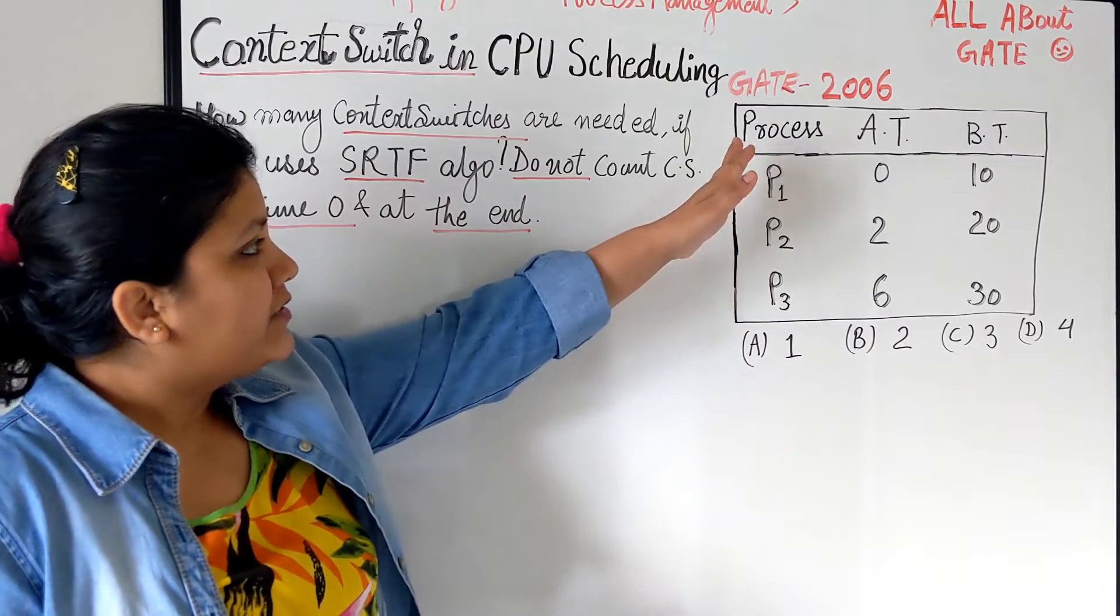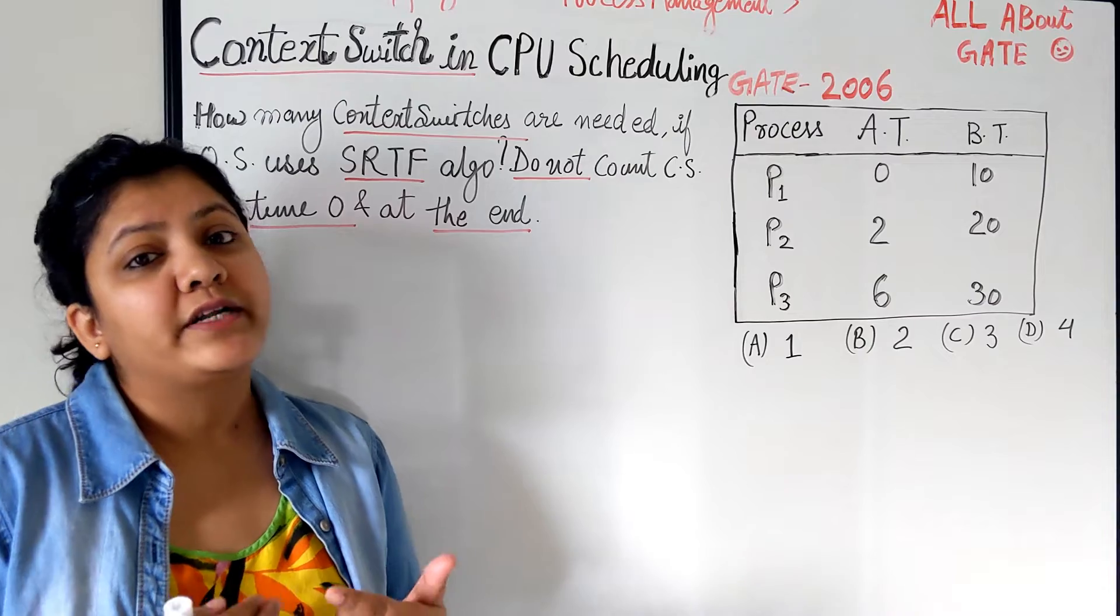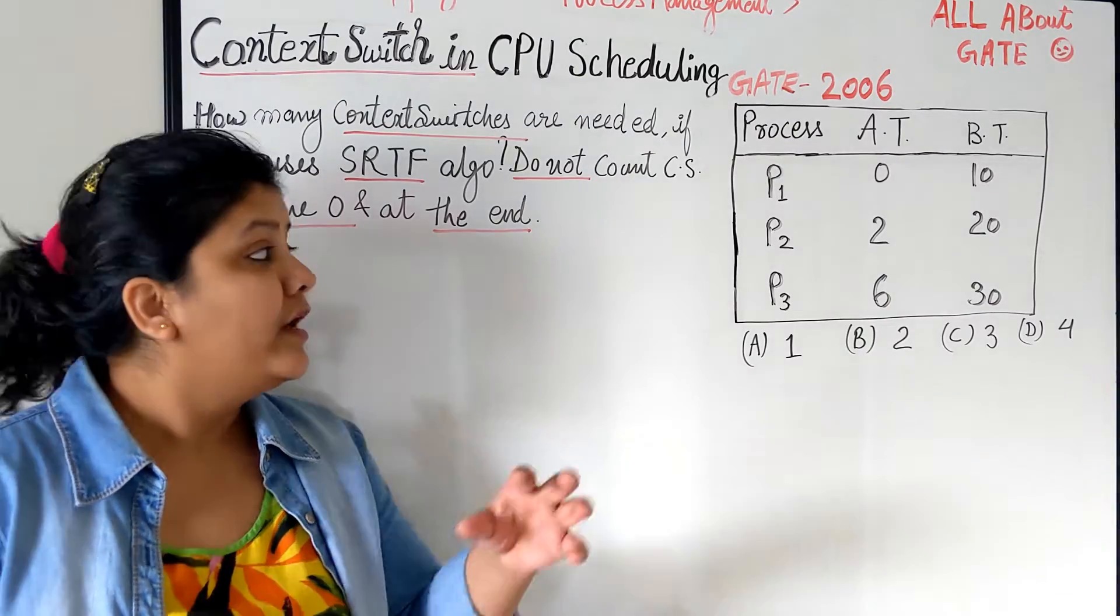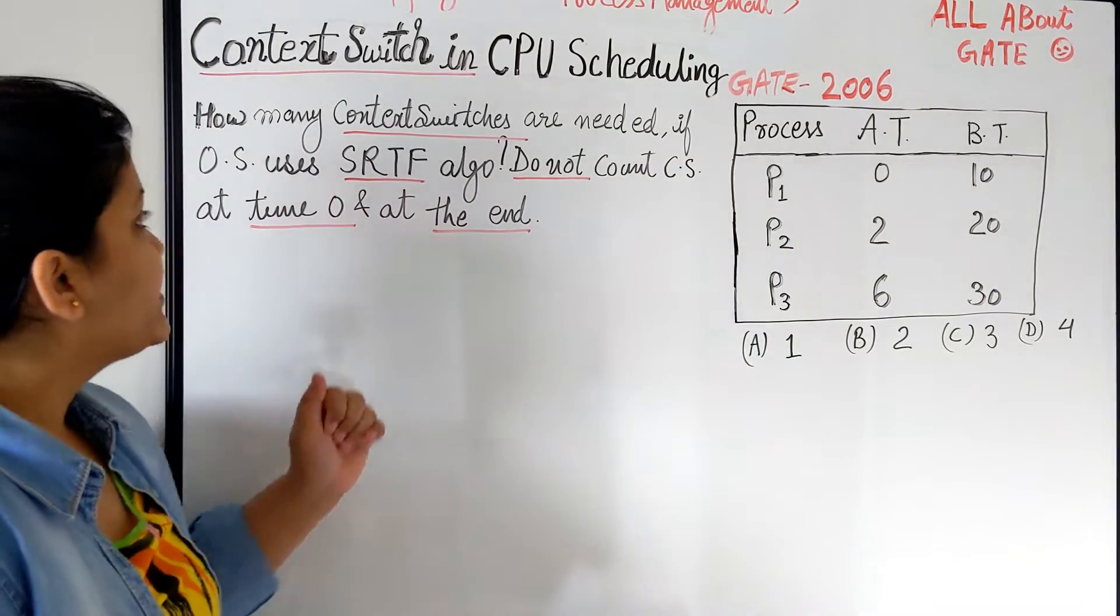The question is Amazon Degui 2006, and here we just have to count the number of times context switch will take place while performing CPU scheduling over these three processes P1, P2, P3.